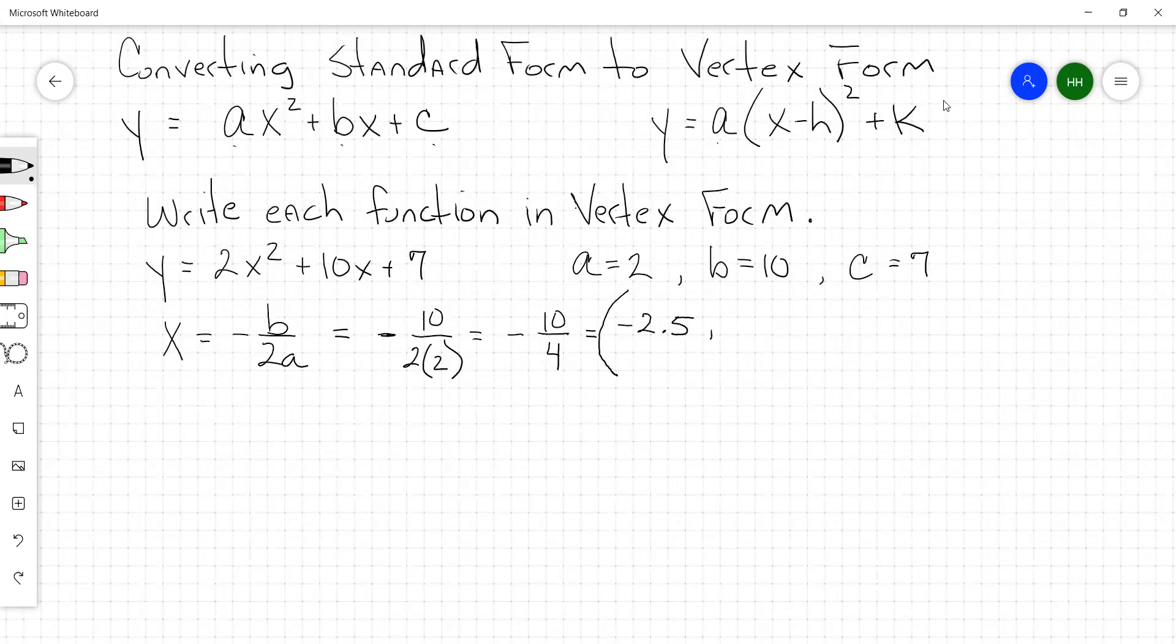So the second step here to find this y value at the vertex is to substitute. We're going to take y equals 2 times negative 2.5 squared plus 10 times 2.5 plus 7. You know what, when I was doing these yesterday, every time I did this, I made that same mistake. I kept forgetting to substitute a negative in the second time that I substituted. This right here has got to be negative 2.5 as well.